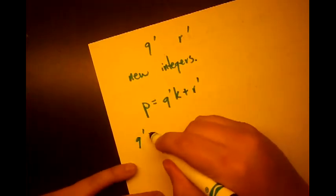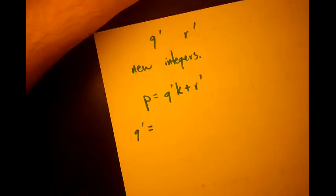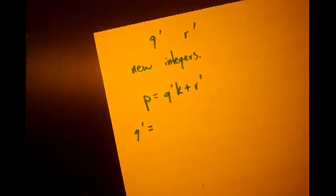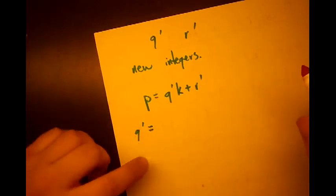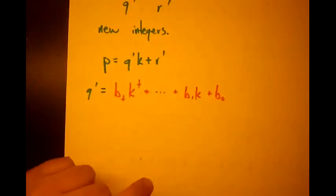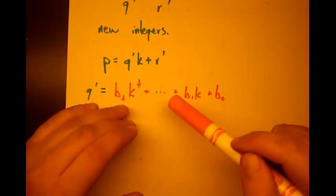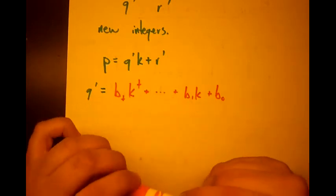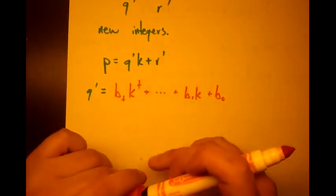then this q prime has to have its own representation. So just like q did. So maybe I'll use a different color for this one. So we can find a representation of q prime to the base k. And how does this representation look? We're going to write it like this using a little different notation. So we're going to say b sub t k to the t plus dot dot dot. And of course these t's, the next term would be b sub t minus 1 k to the t minus 1, going all the way down to b sub 1 k plus b naught, or b sub 0.